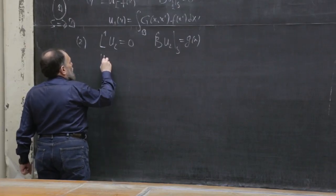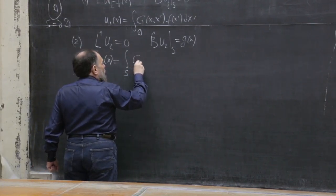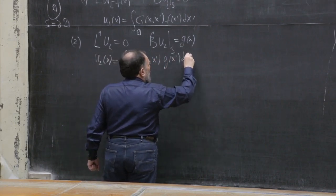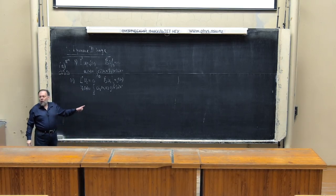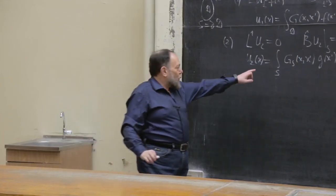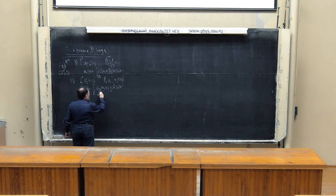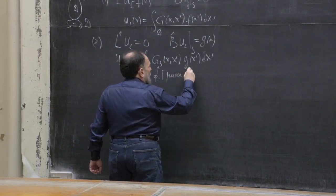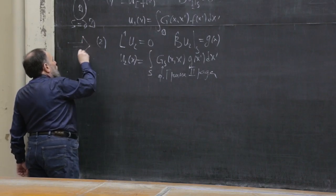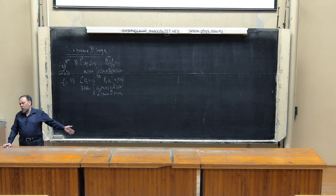Сегодня мы будем решать именно эту задачу и записывать её решение в таком виде: U2 равняется интеграл G от X к X′, G от X′ по X′. Здесь интеграл по поверхности — интегрирование только по S, где задано условие. Функция, определённая на поверхности, на границе области, называется функцией Грина второго рода.